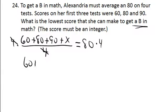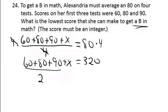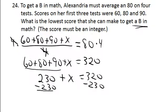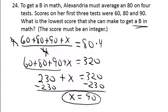Now it's just a simple solution. I would clear the fractions by multiplying both sides by 4. And that simply leaves 60 plus 80 plus 90 plus X equals 320. And when you add up 60, 80, and 90, you get 230. Then subtract 230 from both sides of the equation. So Alexandra needs at least a 90 on test 4 in order to get a B in the course.